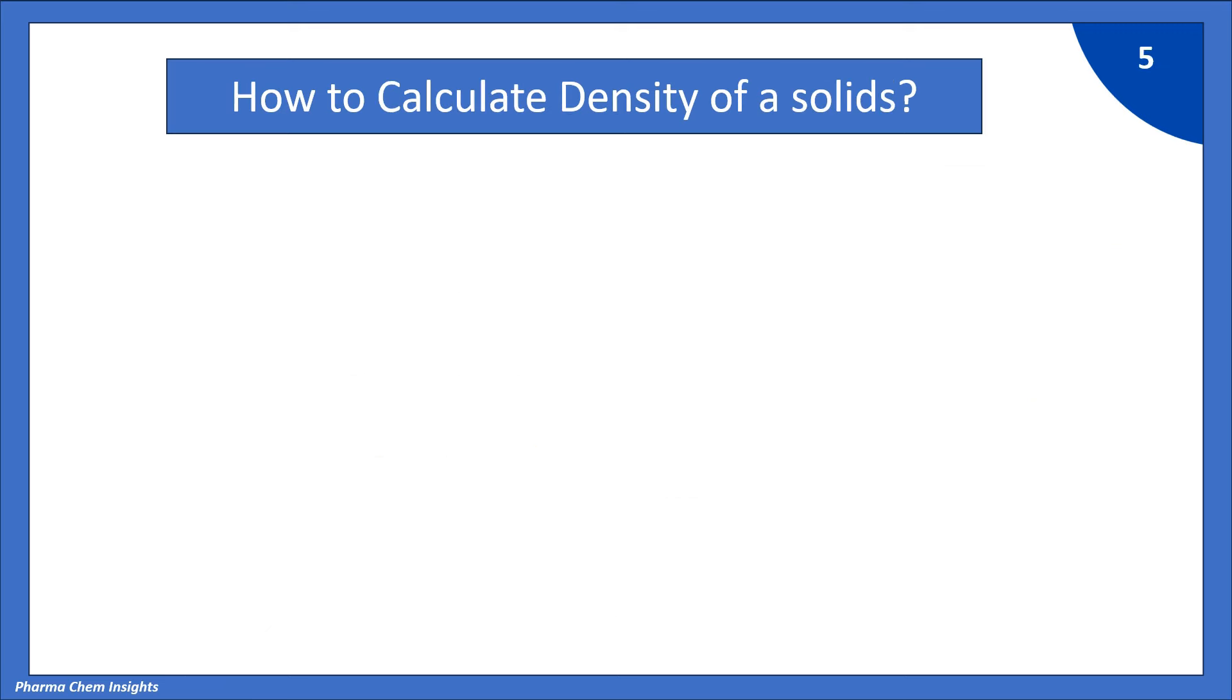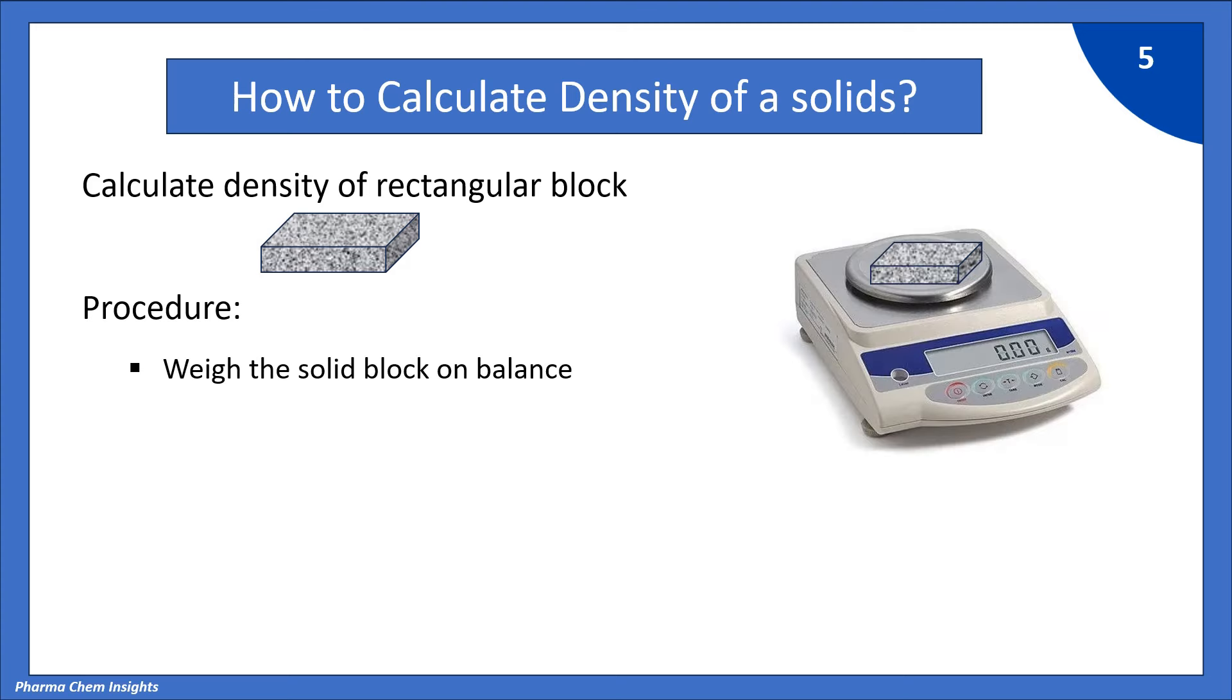Now, let us see how to calculate density of a solid. Let us calculate density of rectangular block. Procedure. First, weigh the solid block on balance. The mass of solid block is 250 g.